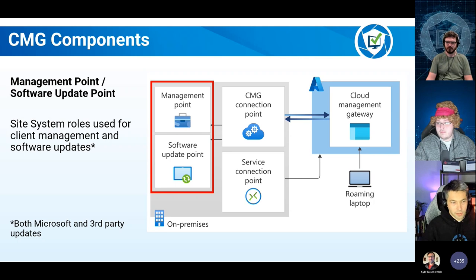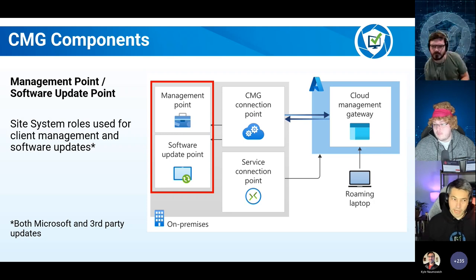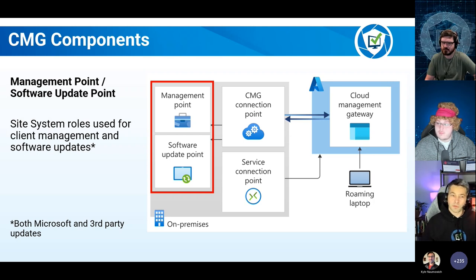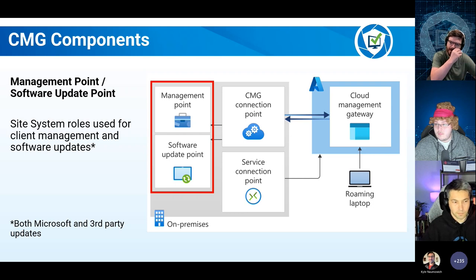The cloud management gateway is kind of a two-part service. You have that proxy service that the clients talk to, and you also have the storage part of the service as well — content is actually stored in the cloud management gateway. We can show that when we pull up Azure and show these components — you can see the bits and pieces that make up a CMG.